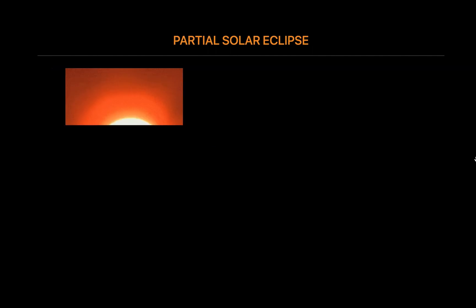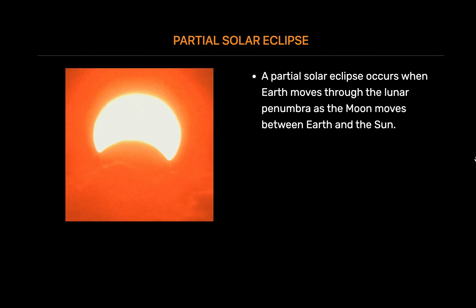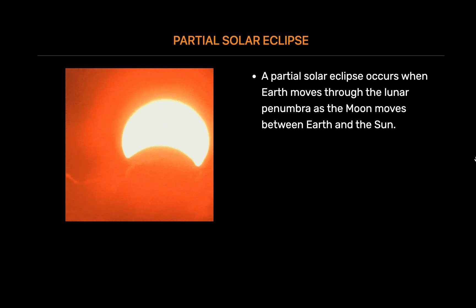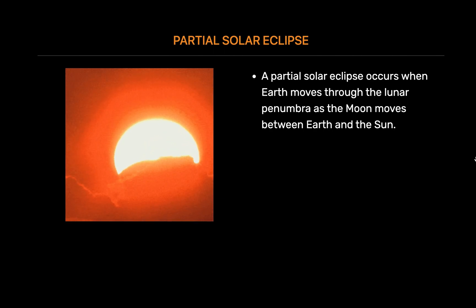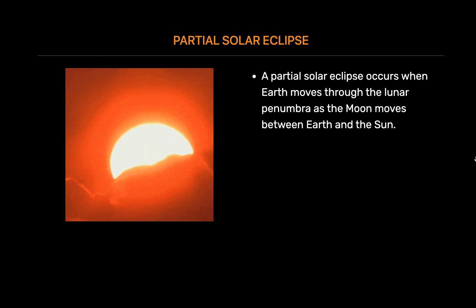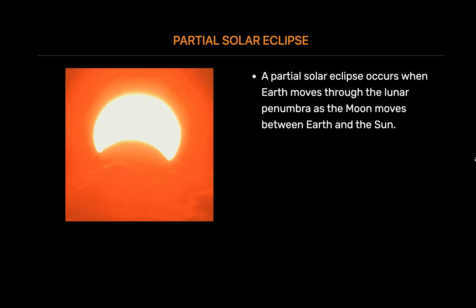Partial solar eclipse. During a partial solar eclipse, the Moon, the Sun and Earth don't align in a perfectly straight line, and the Moon casts only the outer part of its shadow, the penumbra, on Earth. From our perspective, this looks like the Moon has taken a bite out of the Sun.